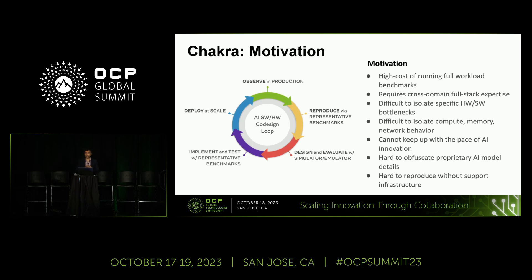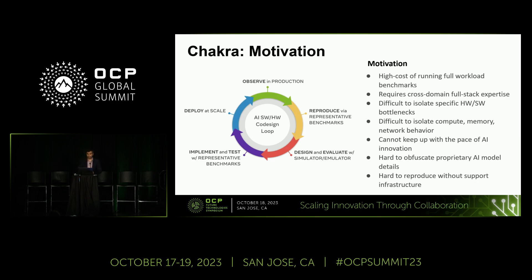One challenge in designing next-generation systems from a benchmarking perspective is the huge cost of running full workload benchmarks. Running an MLPerf workload over a distributed system requires clusters with thousands of GPUs, which only a few hyperscalers can afford. It also requires heavy cross-domain expertise across the software and hardware stack, making it difficult to isolate specific bottlenecks on compute, memory, and network. It's also hard to keep up with AI innovation, and companies are often hesitant to share full workload details due to proprietary information concerns.